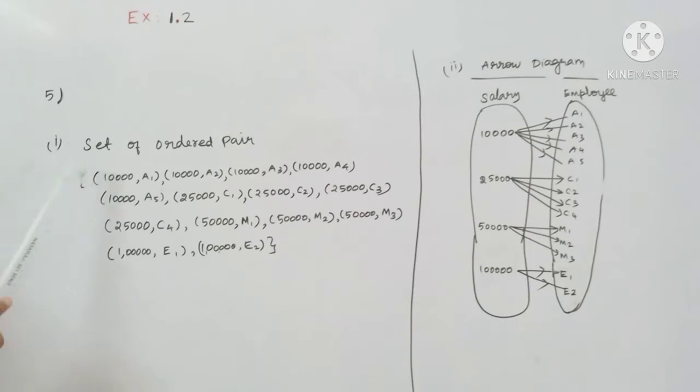The first set of ordered pairs is salary to employee. The first salary is 10,000. So who is 10,000? There are 5 assistants.